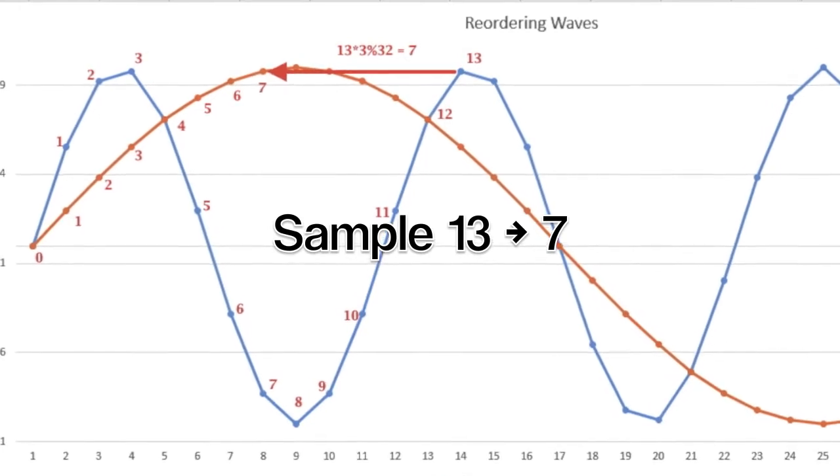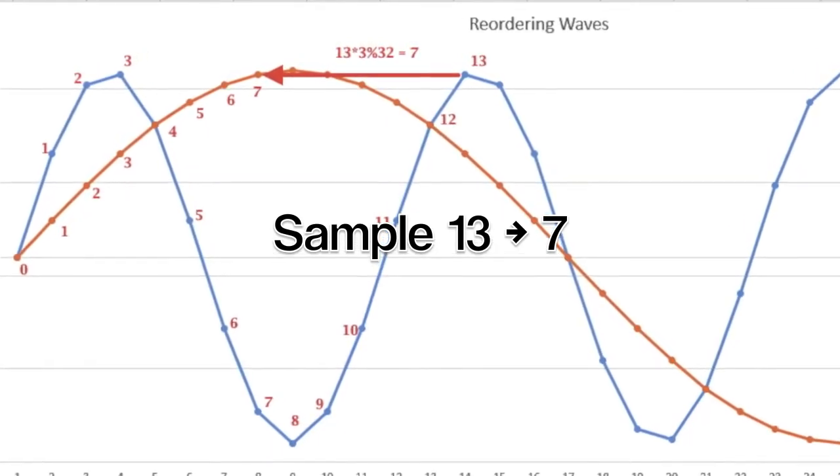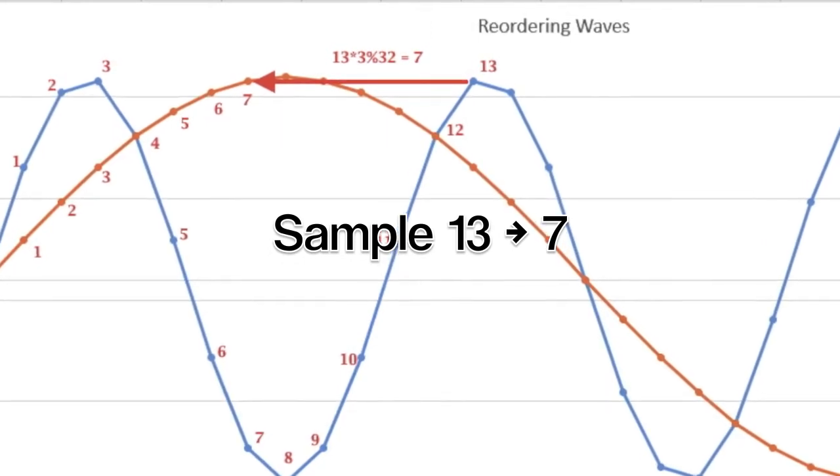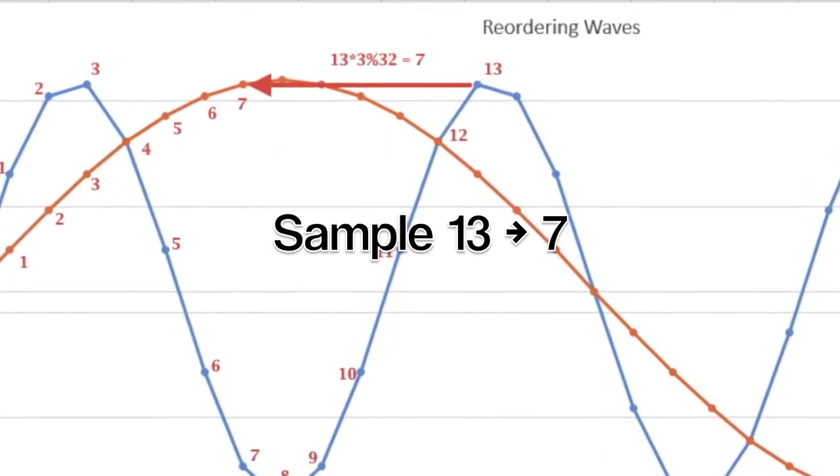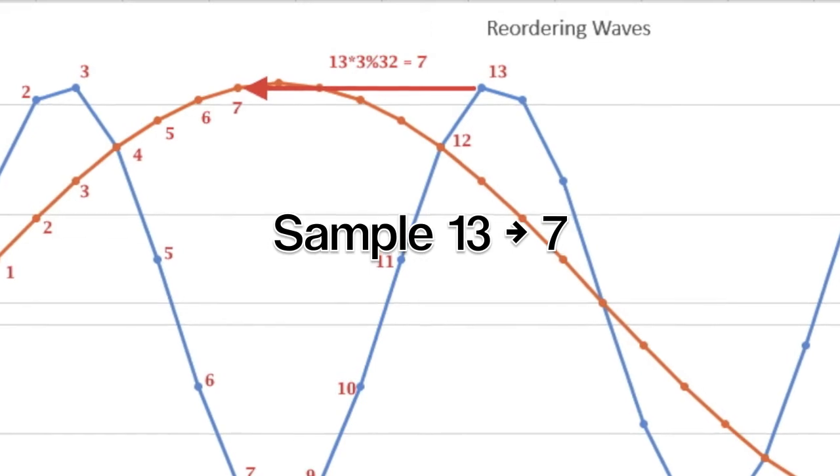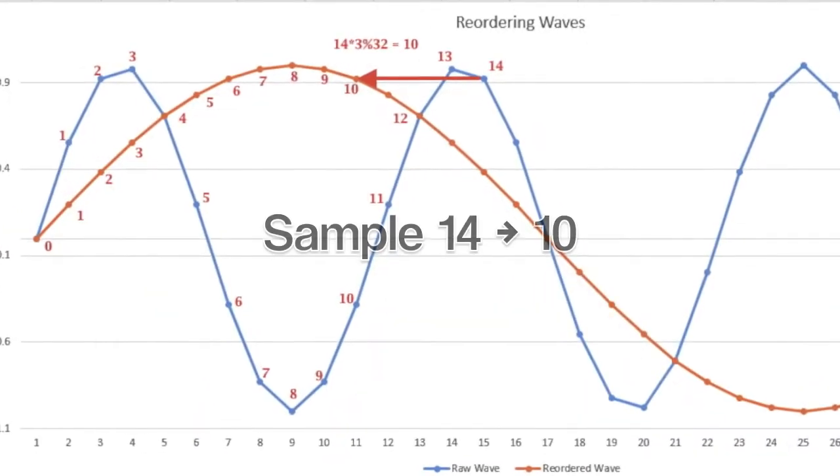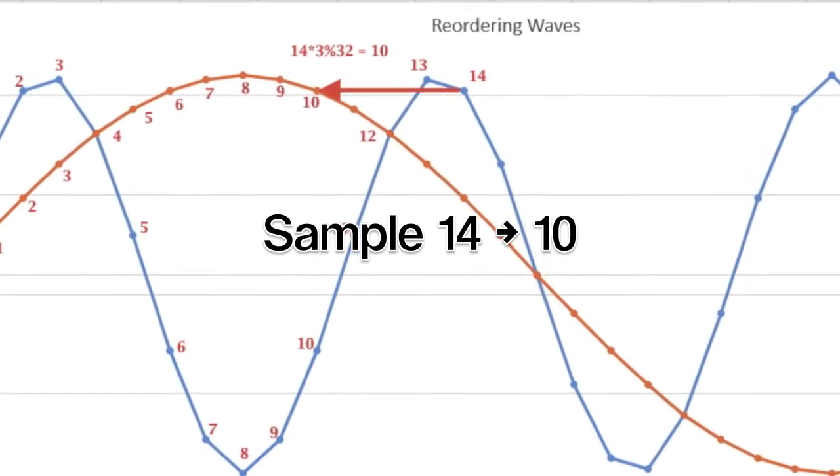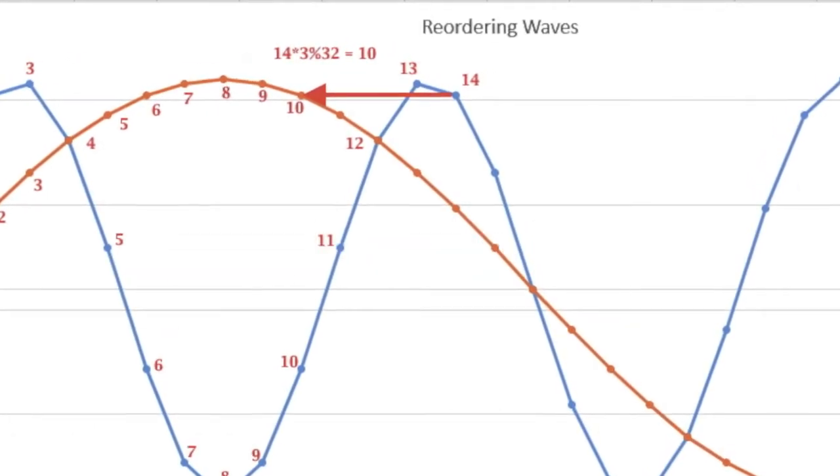Thirteen times three is thirty-nine. And thirty-nine modulo thirty-two is seven. So sample thirteen goes back to sample seven in the one cycle waveform. This is how the gaps that we left behind in the first pass get filled in. Fourteen times three is forty-two. And forty-two modulo thirty-two is ten. So sample fourteen belongs in sample ten.